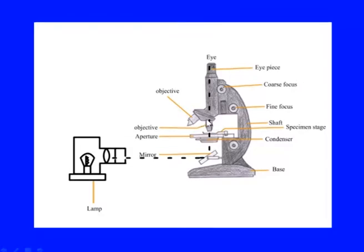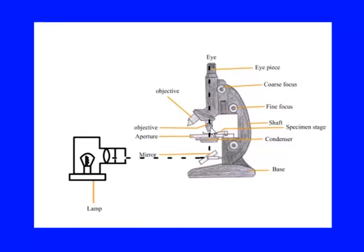The objective lenses are attached to a rotating nosepiece threaded onto the tube, and on the other end is the eyepiece. The nosepiece can be rotated to select objectives of different magnification — 10x, 20x, 40x, or 60x — as per the application. Most advanced microscopes are parfocal, meaning the specimen does not lose focus when changing the objective by rotating the nosepiece.